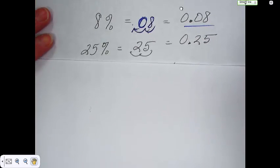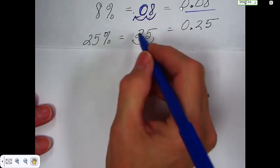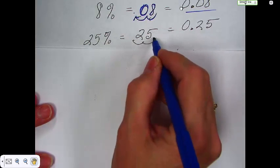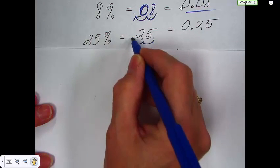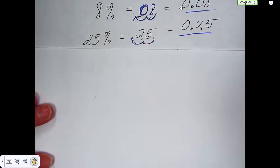Same thing as 25 percent. You write 25. Start here. Two places to the left. Put in your decimal point. You end up with 0.25.